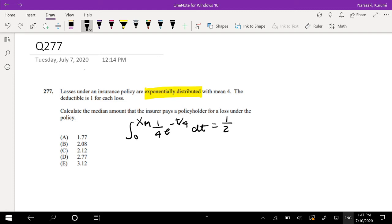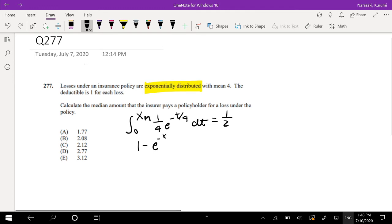So then this would equal... This part is just the CDF, right? Going from 0 to XM. So this is just the CDF of XM, which would just mean this is equal to 1 minus e to the negative XM over 4. And this is equal to half.